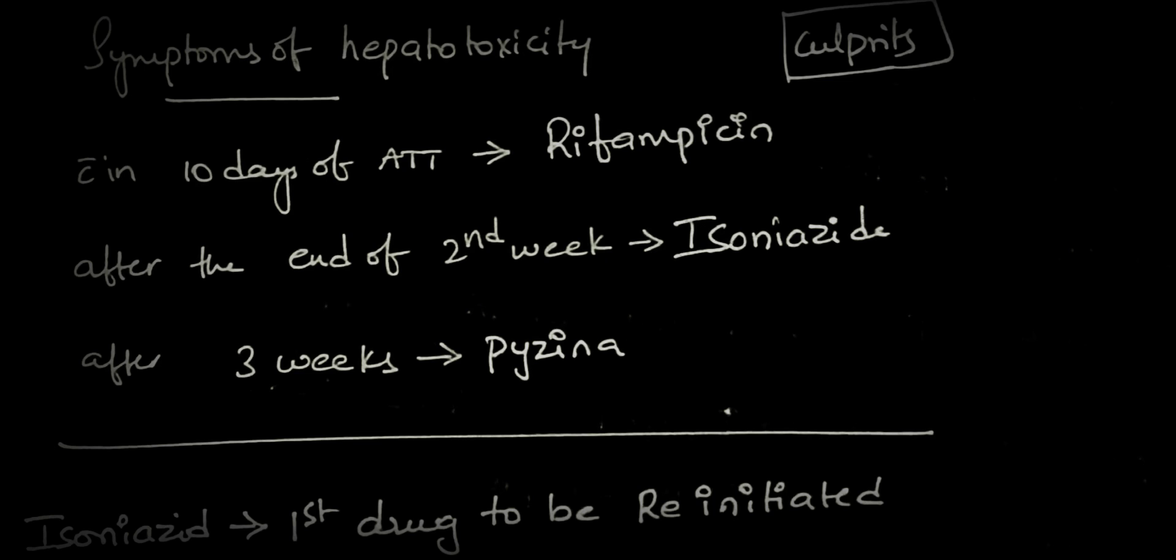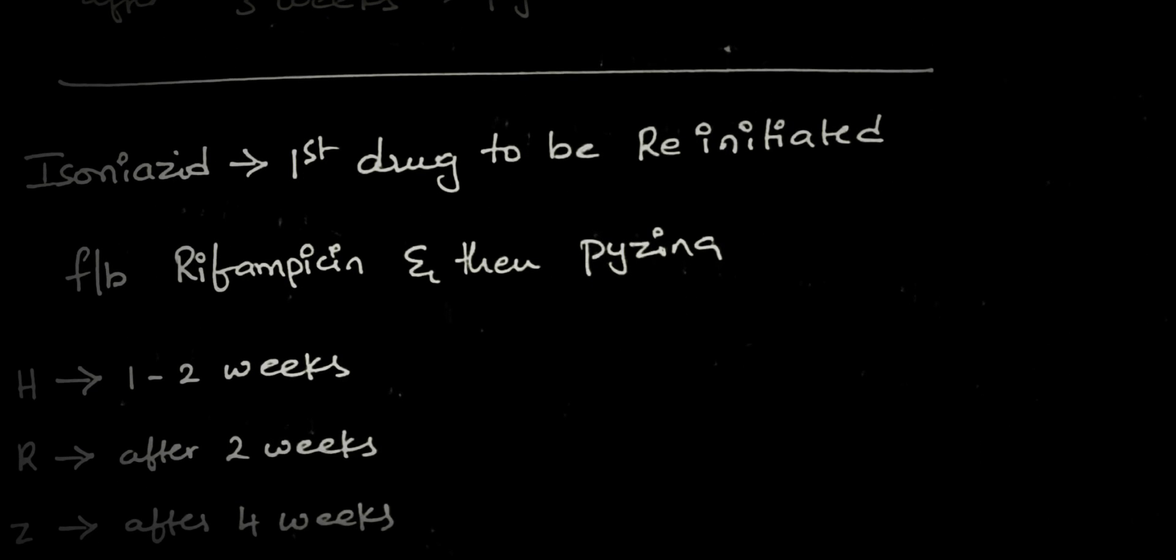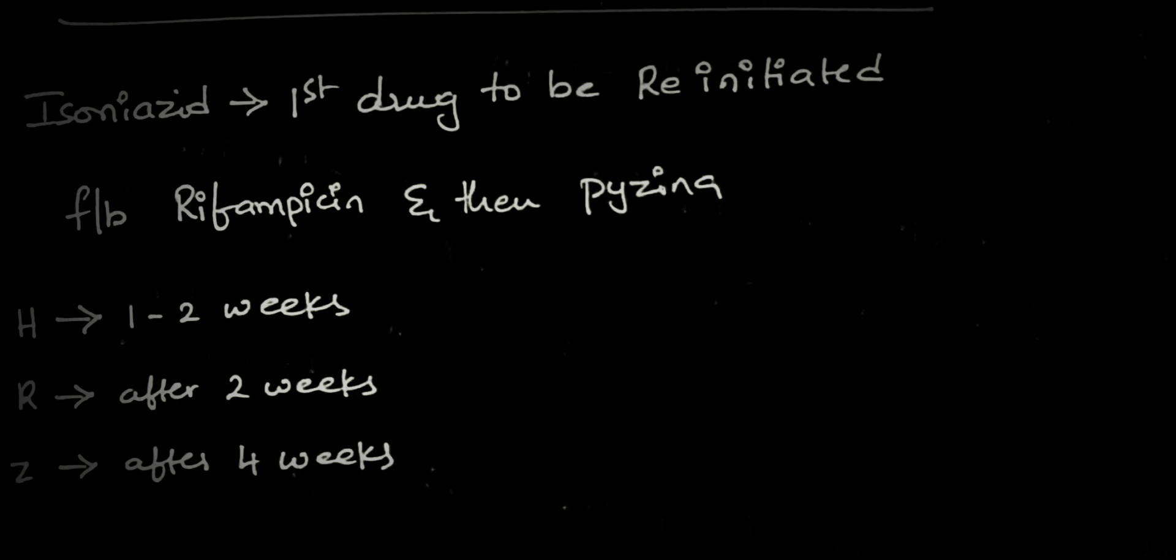After stopping all ATT drugs in a patient with hepatotoxicity and increased bilirubin levels with symptoms, isoniazid is the first drug to be reintroduced. Start the patient on isoniazid with low doses and watch for 1-2 weeks. If stable after 2 weeks, add rifampicin. If the patient remains stable, add pyrazinamide after 4 weeks.